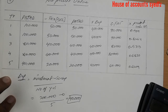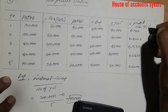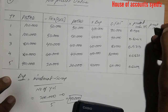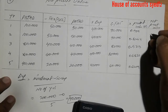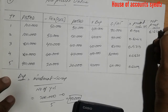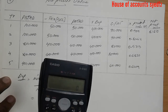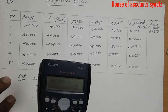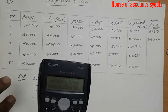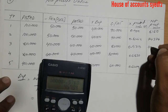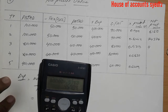Now calculating present values: ninety thousand into 0.909 gives 81,810. Next, ninety thousand into 0.8264 gives 74,376. Next, eighty thousand into 0.7513.